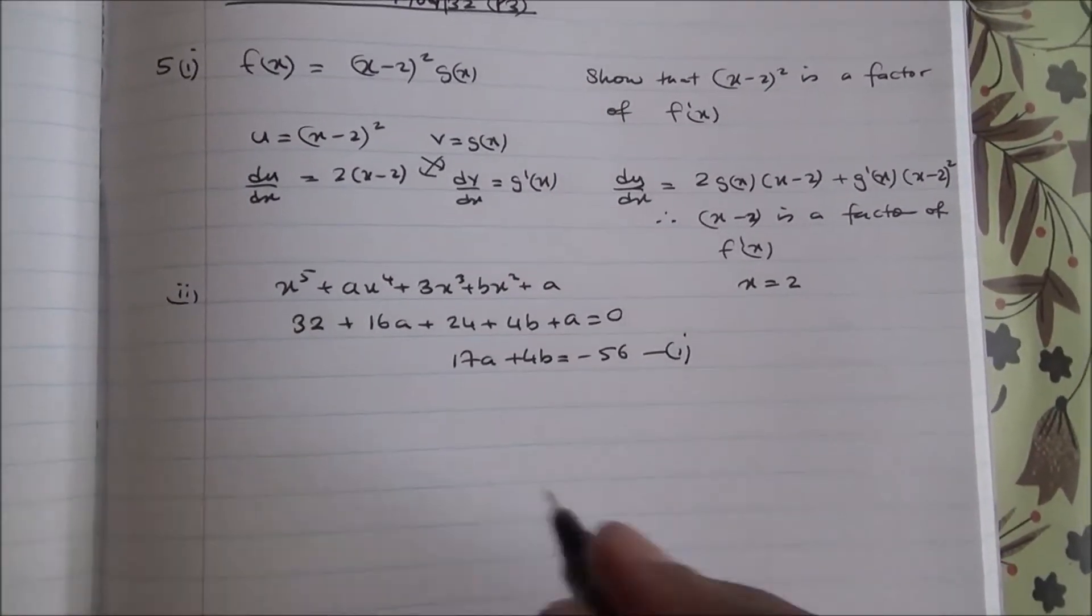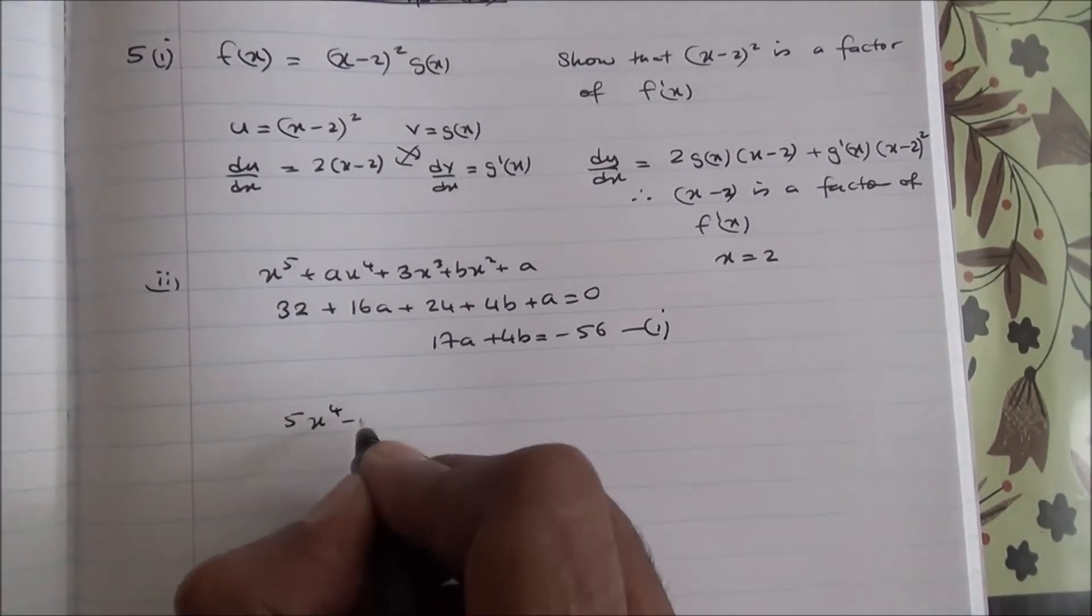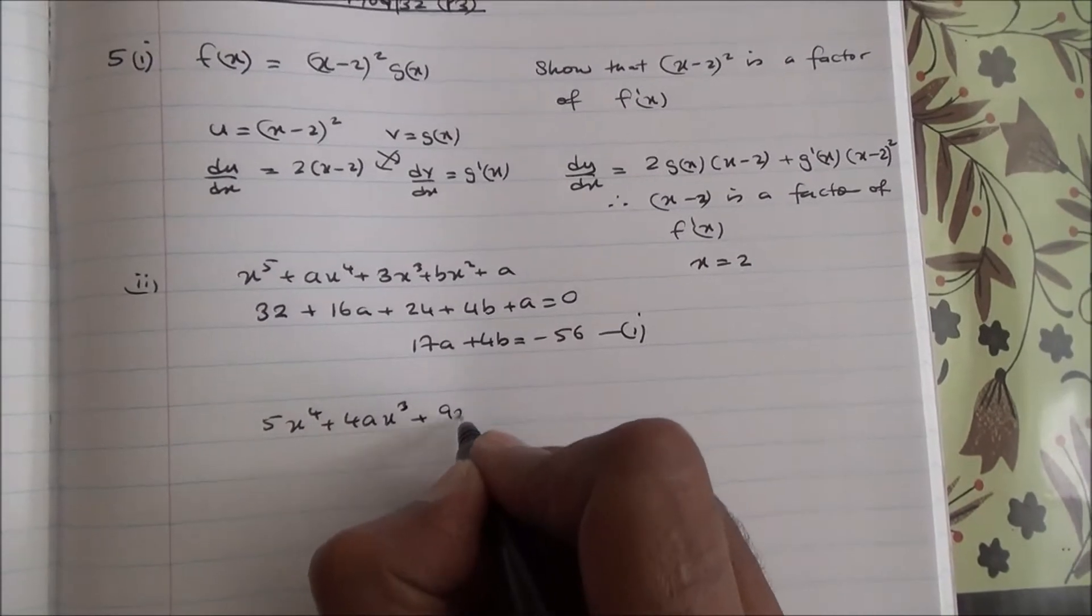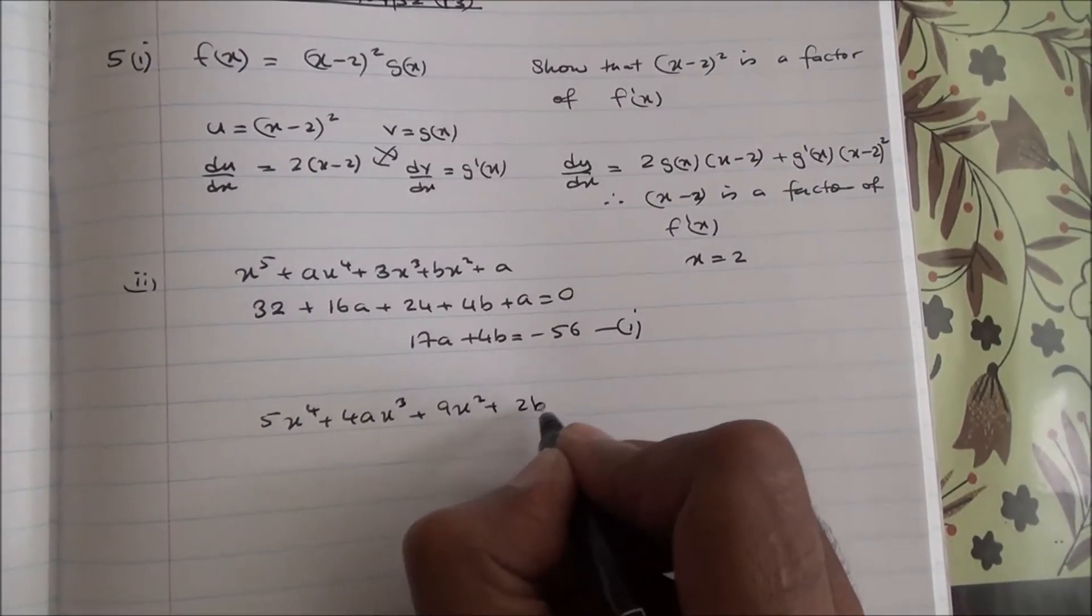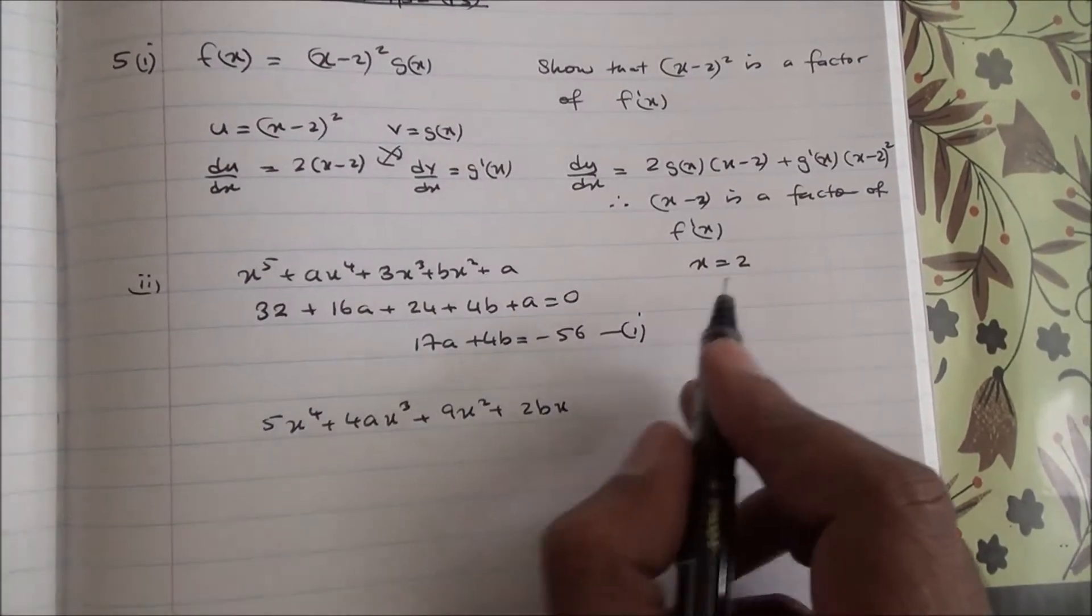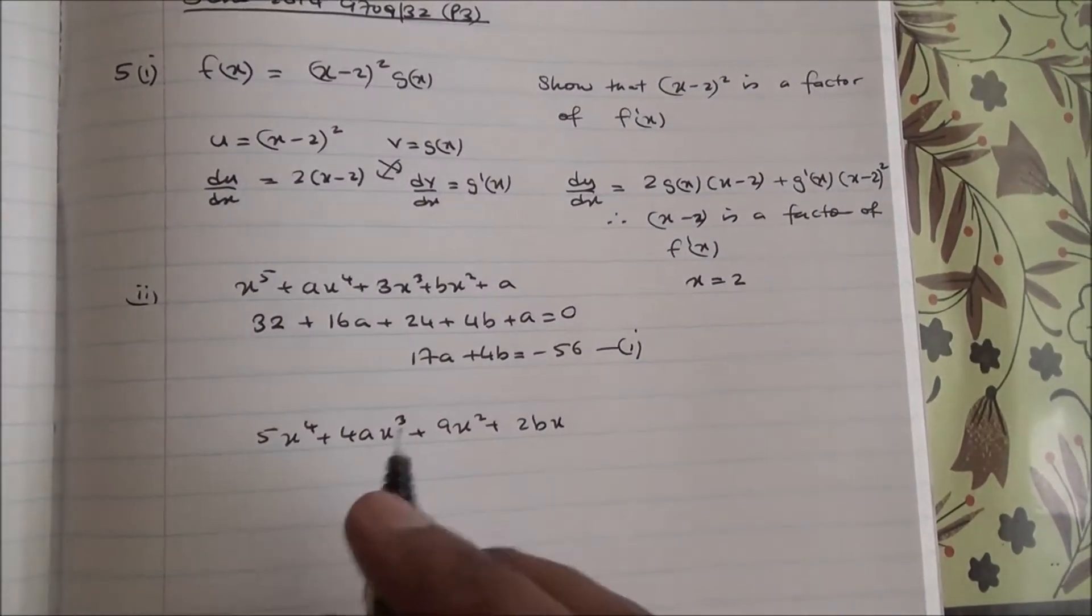For the second equation, we need to differentiate the expression. So, we're going to get 5x⁴ + 4ax³ + 9x² + 2bx + 0. If you substitute x = 2 in here,